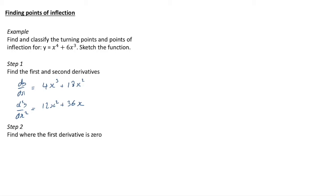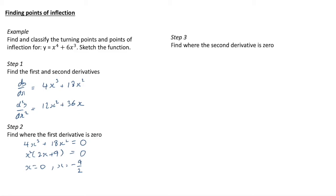Step two: find where the first derivative is zero. Setting 4x³ + 18x² = 0, we factorise to get x²(2x + 9) = 0, giving solutions x = 0 or x = −9/2. We also find where the second derivative is zero: 12x² + 36x = 0. Dividing by 12 and factorising gives x(x + 3) = 0, so x = 0 or x = −3.